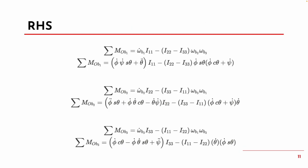We can plug in what we have so far into the right-hand side to get the following. While we're still missing the principal mass moments of inertia, we'll find them in the next step as we evaluate the left-hand side of our Euler equations.